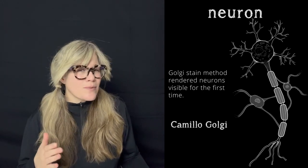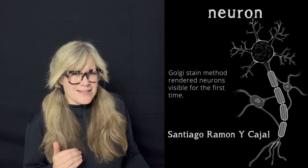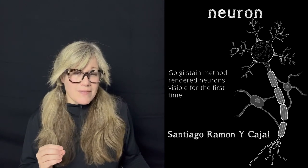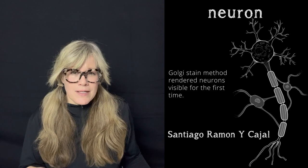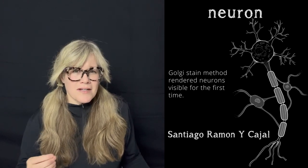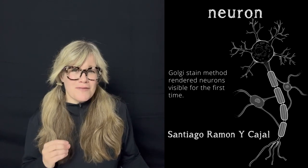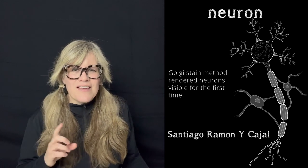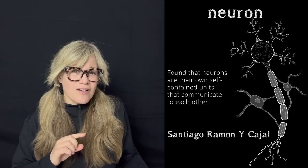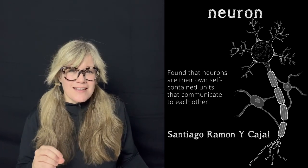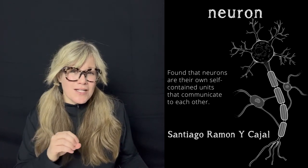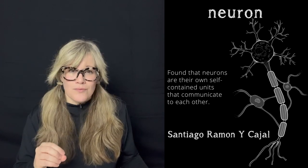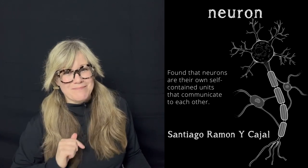This is where Ramón y Cajal enters the scene. He refuted Golgi's theory — ironically, by using the Golgi stain method to study the nervous tissue of many organisms, including human — and he found that neurons are indeed their own contained units and communicate to each other, albeit at an extremely close range.